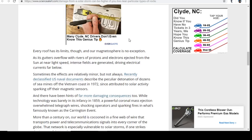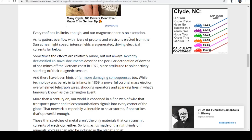This is a confluence of so many different things coming in at the same time. As the magnetosphere's gutters overflow with rivers of protons and electrons ejected from the sun at nearly light speed, intense fields are generated, driving electrical currents far below. Sometimes the effects are relatively minor, but not always. Recently declassified naval documents describe the peculiar detonations of dozens of sea mines off the Vietnam coast in 1972, attributed to solar activity sparking their magnetic sensors. Think about all the things that could be lit up with a big frequency event of large amplitude.